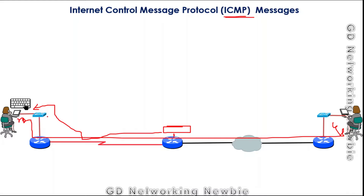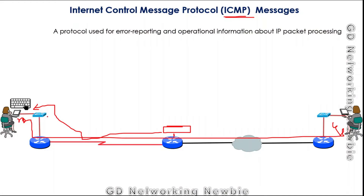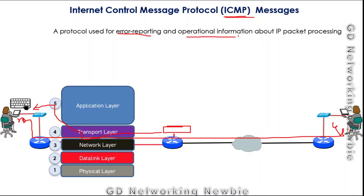In addition to error reporting, ICMP can also be used for diagnostic purposes. For that we have commands like ping and traceroute, which use ICMP to check the connectivity and reachability of nodes. Broadly, these are the two main purposes of ICMP. ICMP is a network layer protocol used for error reporting and signaling operational information about IP packet processing.